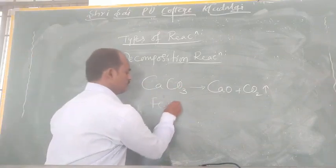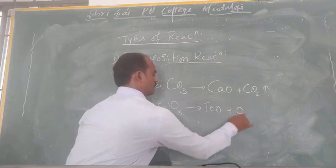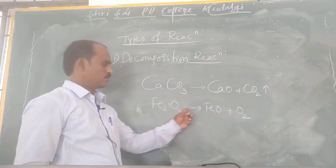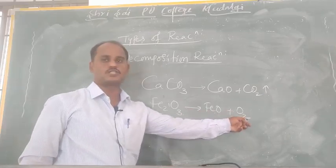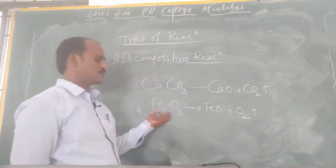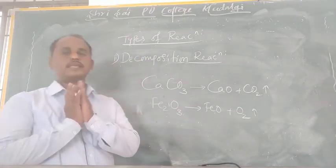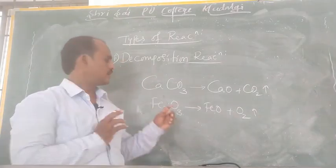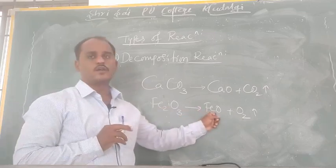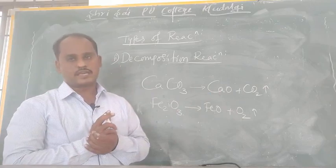Another example: ferric oxide (Fe₂O₃) decomposes to give ferric oxide plus oxygen. So basically in a decomposition reaction a single reactant breaks down and decomposes to give one or more products — that is called a decomposition reaction.